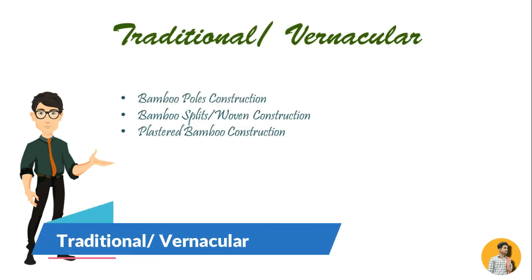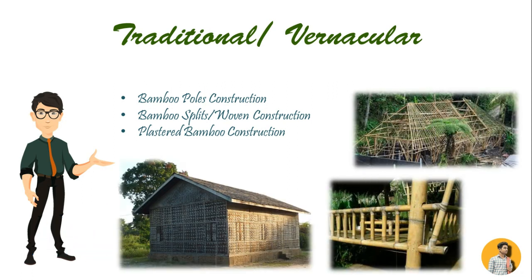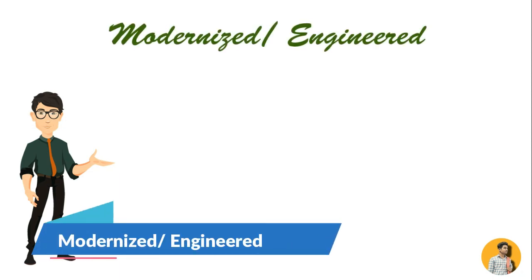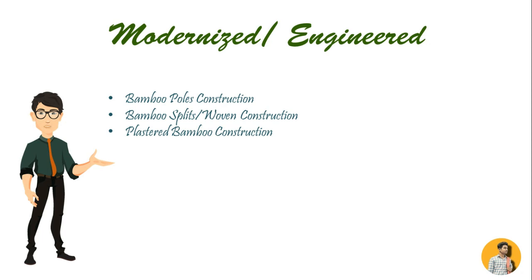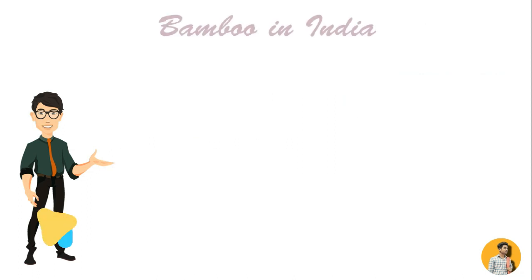Conventional bamboo constructions are traditional or vernacular. Bamboo pole construction mostly consists of planar frames — two-dimensional frames mostly in one layer. Other types include bamboo splits woven construction, plastered bamboo construction which is relatively simple and plastered and rendered with mud, lime or cow dung. These are examples of conventional, modernized or engineered bamboo construction in India.